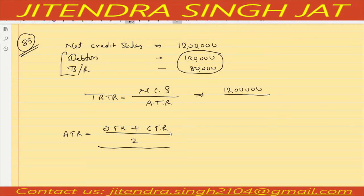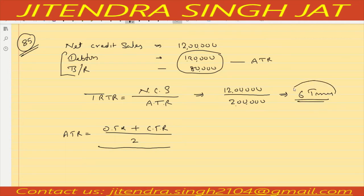When opening is not given and only closing is given, we do not divide by 2 because two separate values are not available. So 1 lakh 20,000 plus 80,000 equals 2 lakh, which we consider as average trade receivable. So 12 lakh divided by 2 lakh equals six times — meaning the company is able to generate sales six times in one year.